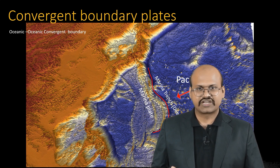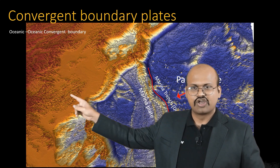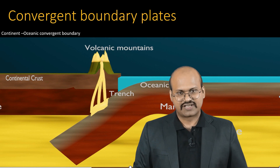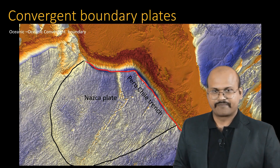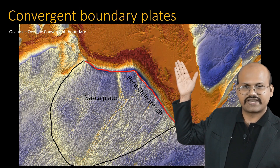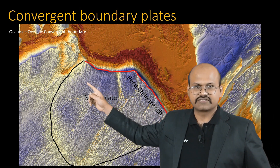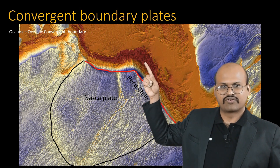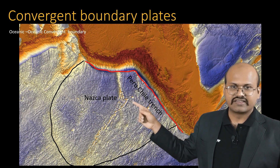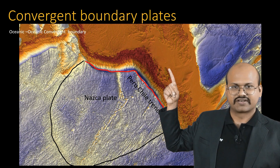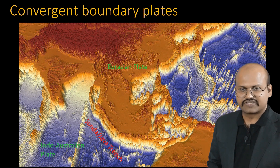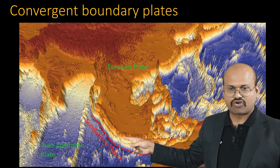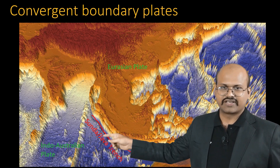At continent-ocean convergent boundaries, the oceanic plate subducts under a continental plate, and friction produces magma that rises to form volcanic mountains. The Andes mountains are an example: the Nazca plate subducts under the South American plate, forming the Peru-Chile Trench and the Andes mountains with significant volcanism. In the Indian Ocean, the Indo-Australian plate subducts under the Eurasian plate, forming the Sunda Trench, also called the Java Trench.